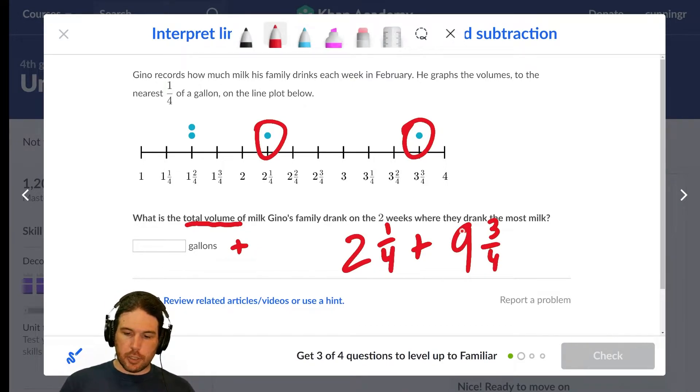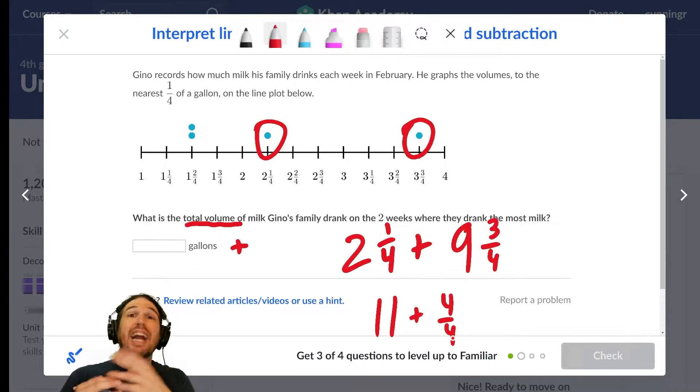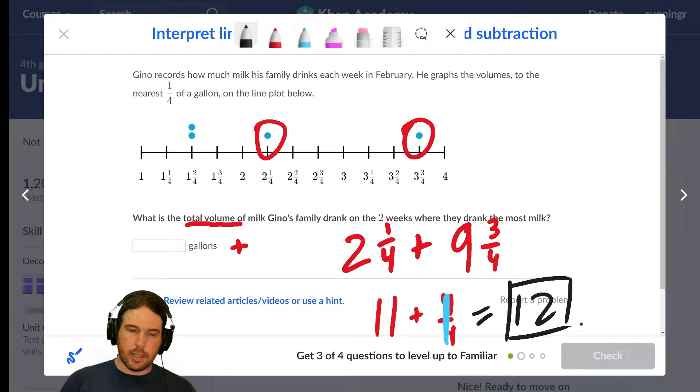Well, let's see. Two and nine is eleven, and one-fourth and three-fourths is four-fourths. Oh hey, I know what four over four is. I know what anything divided by itself is. It's one. So eleven plus one is twelve.